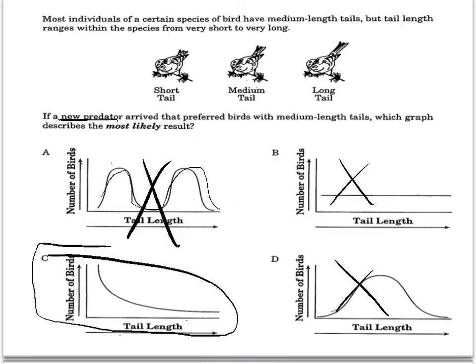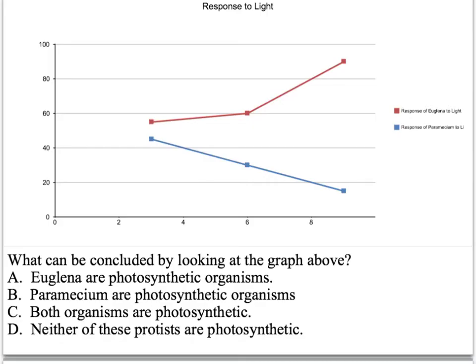Okay. When we look at this graph, we're looking to see what the response of paramecium and euglena is to light, and we're looking at photosynthesis, because if they respond to light, they're photosynthetic organisms. So when we look at the paramecium, it doesn't respond to light.